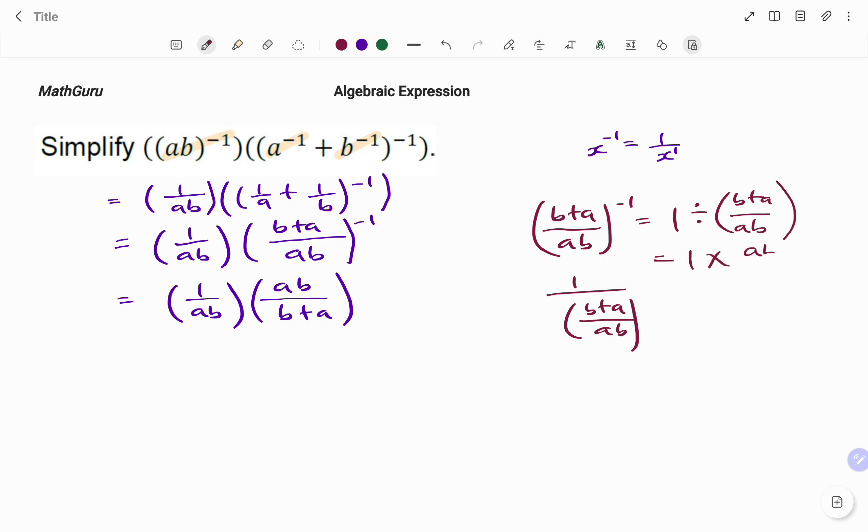That will be ab over b plus a. And one times any value is the same, so that's ab over ab times b plus a, which is what I have.